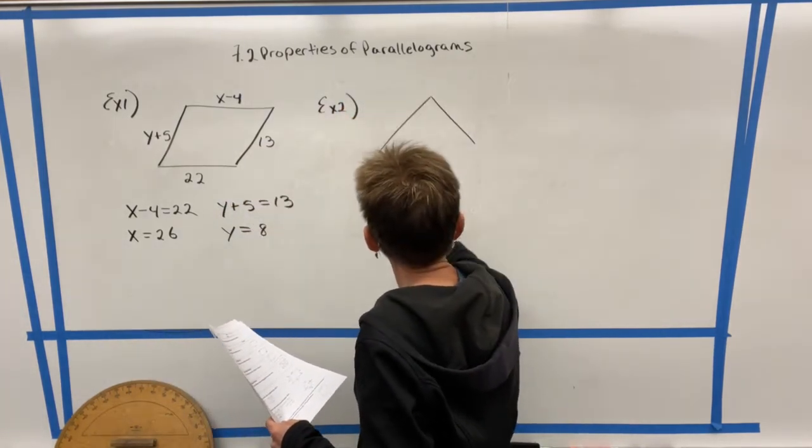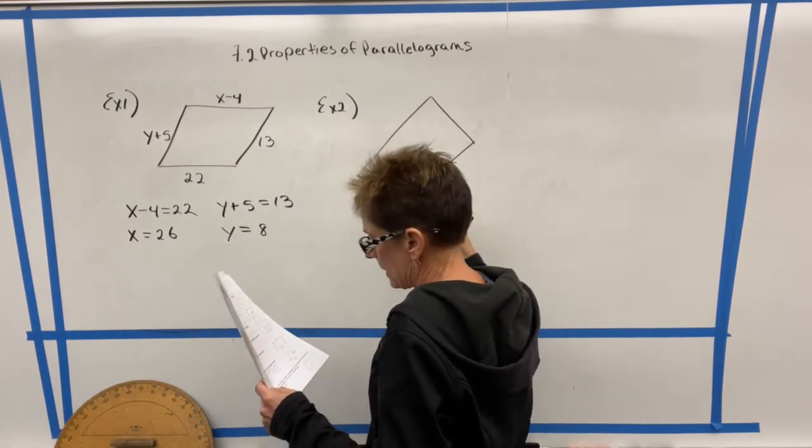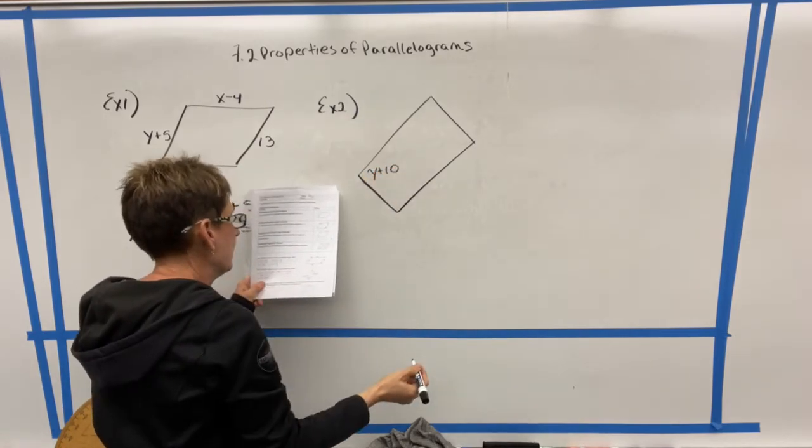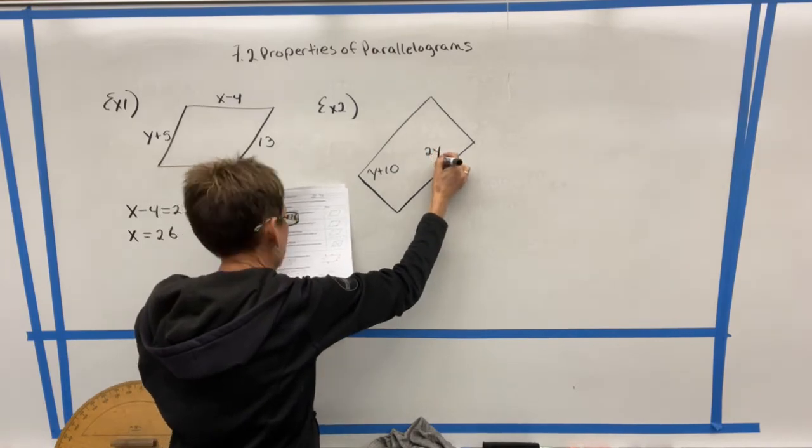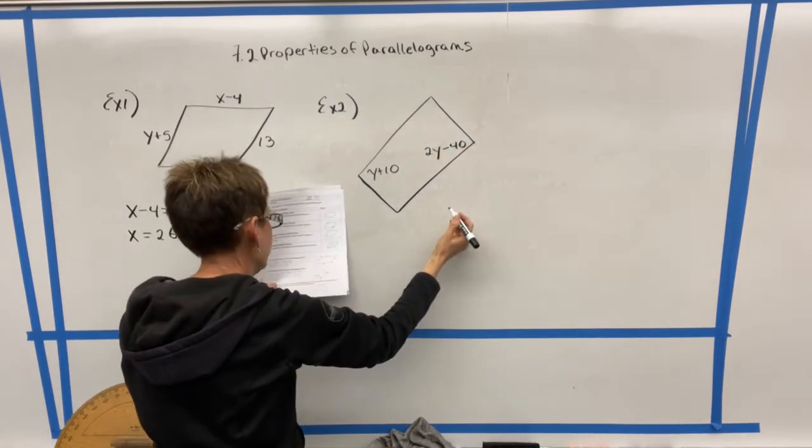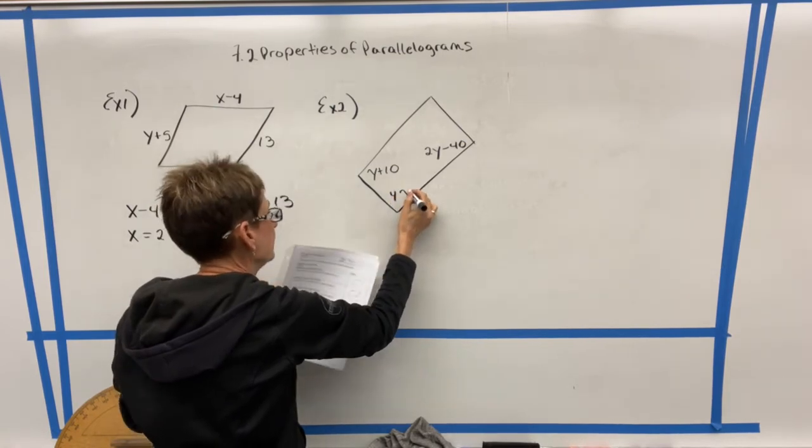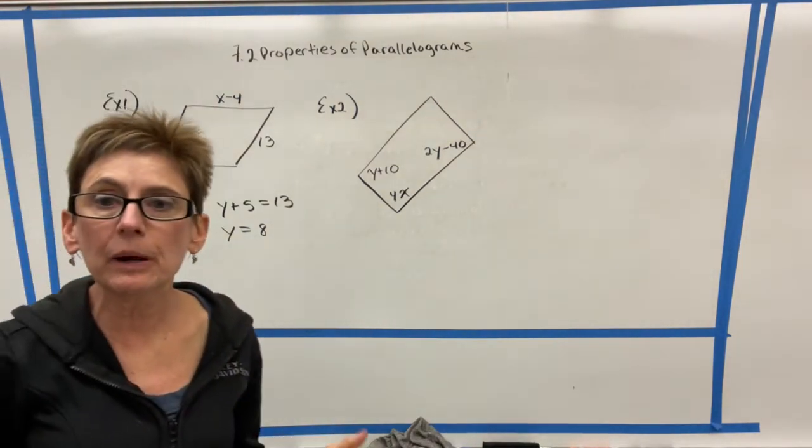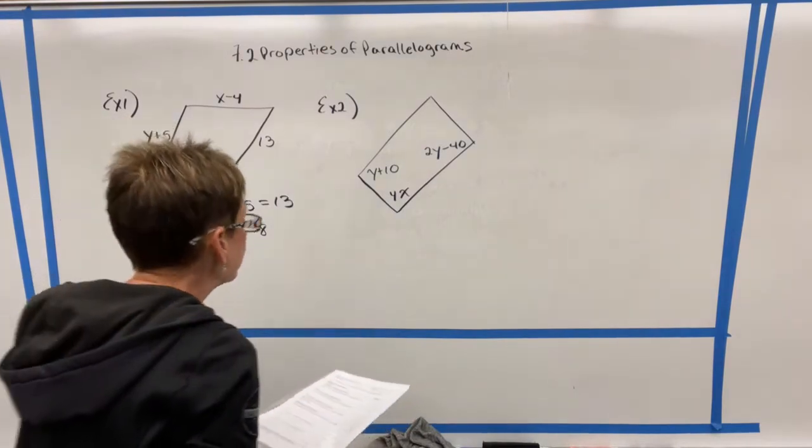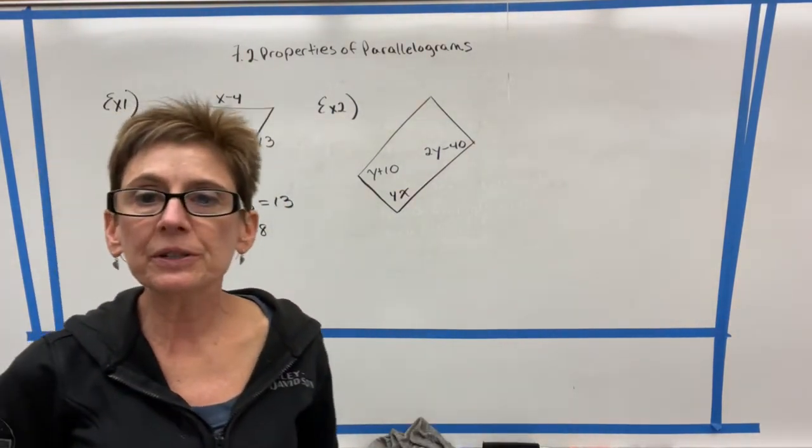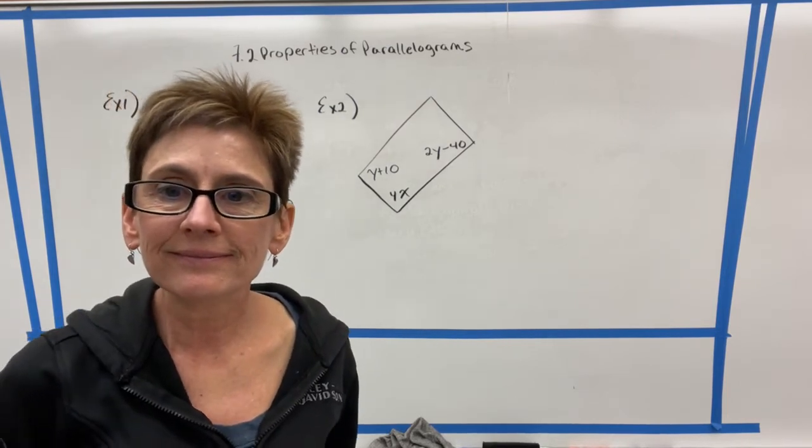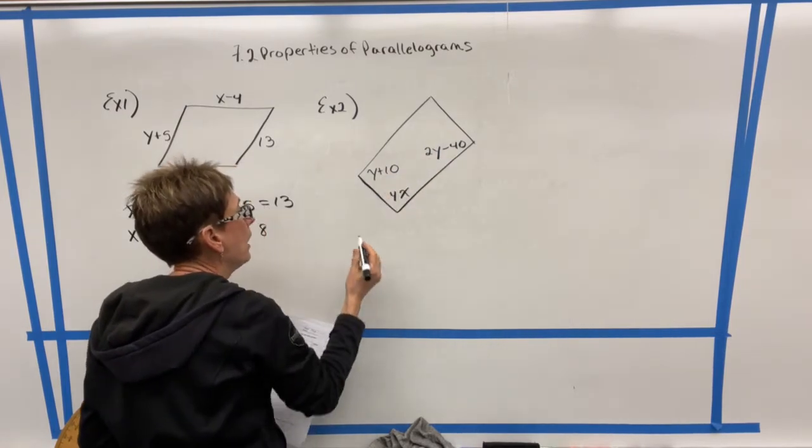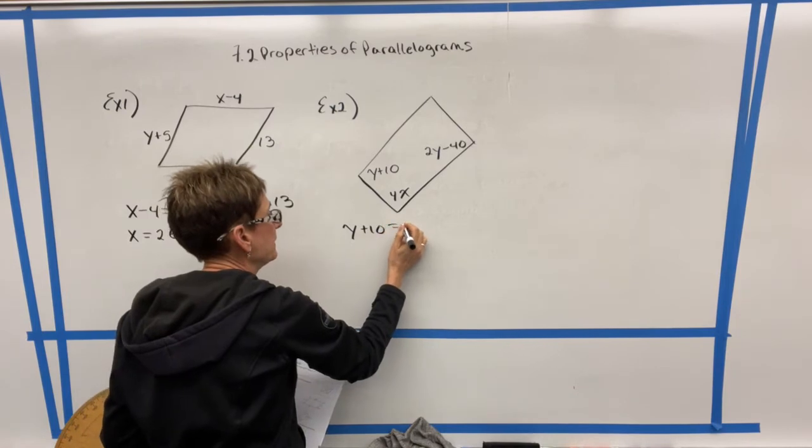Again, this is assuming that we are dealing with a parallelogram. And we've got the angles labeled in this example. So one angle is Y plus 10. The angle opposite it is 2Y minus 40. And a third angle is 4X. Now, in this particular case, we have to be a little bit strategic about what we do first. Does anybody know what the first step would be here? What must we do first? Well, we know that the opposite angles are congruent, and both of these expressions involve Y. So the first thing that we need to do is set these equal to each other.